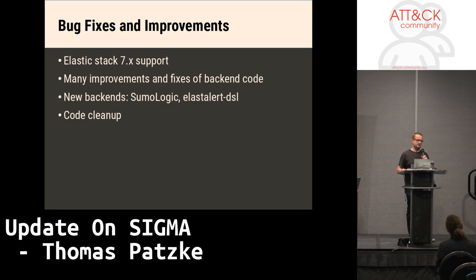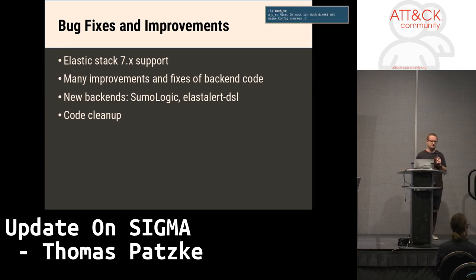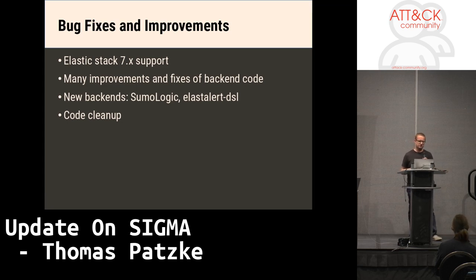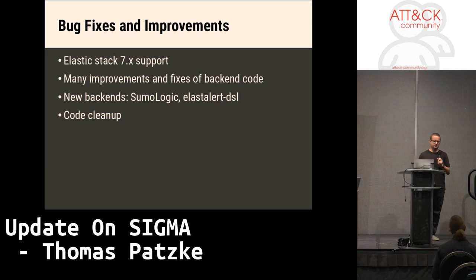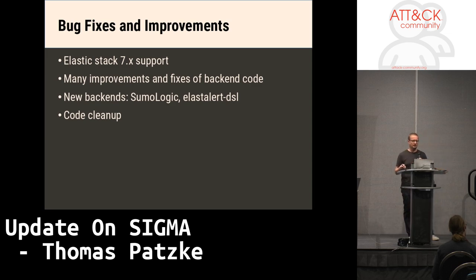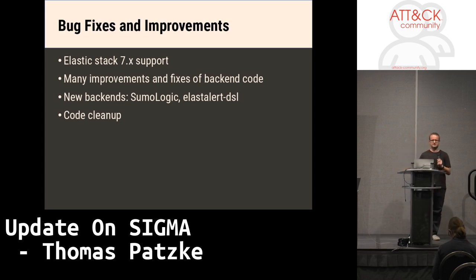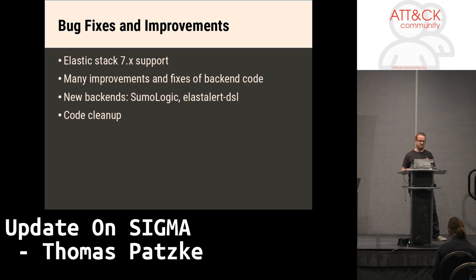Bug fixes and improvements: Elasticsearch 7.x support has been added, with new field naming and further changes prepared in the backend configuration. There are also many other improvements and fixes, some new backends, and new features implemented. Currently the focus also lies on refactoring — making the code more readable because we also want to document it better. Contributors sometimes complain that documentation is not sufficient, and they are right. Code cleanup is not very sexy but it's necessary to make Sigma more usable for contributors.